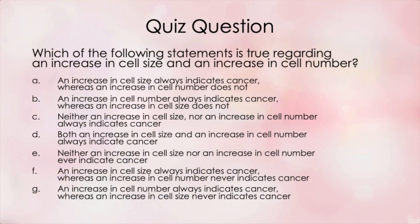Which of the following statements is true regarding an increase in cell size and an increase in cell number? A: An increase in cell size always indicates cancer, whereas an increase in cell number does not. B: An increase in cell number always indicates cancer, whereas an increase in cell size does not. C: Neither an increase in cell number nor cell size always indicates cancer. D: Both always indicate cancer. E: Neither ever indicates cancer. F: An increase in cell size always indicates cancer, whereas an increase in cell number never indicates cancer.